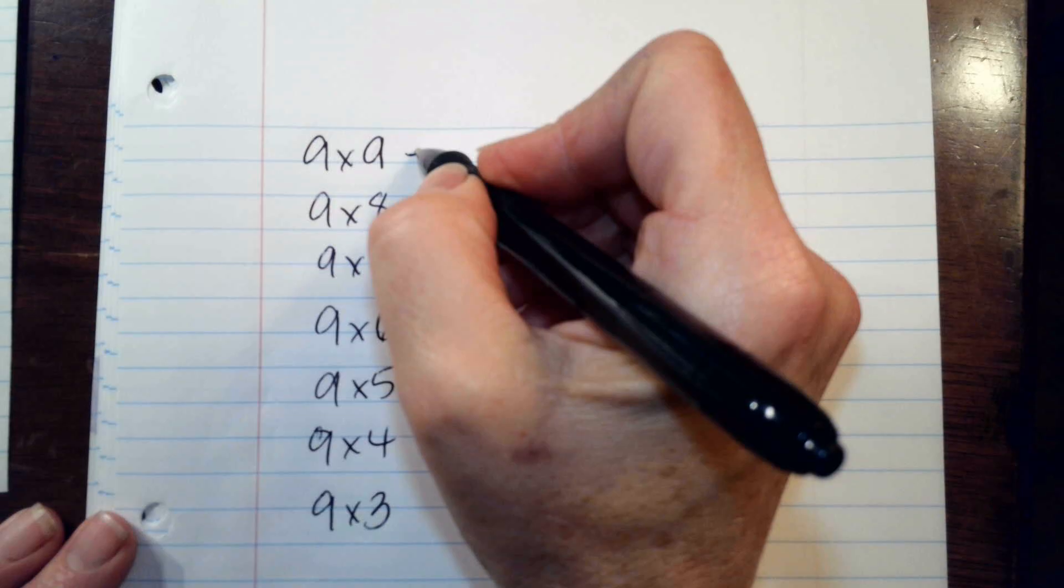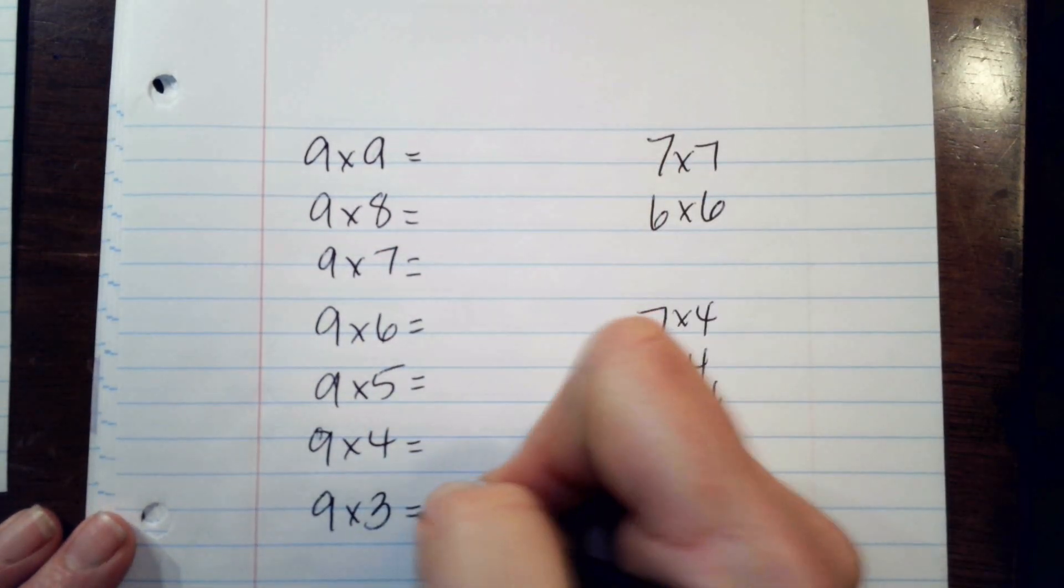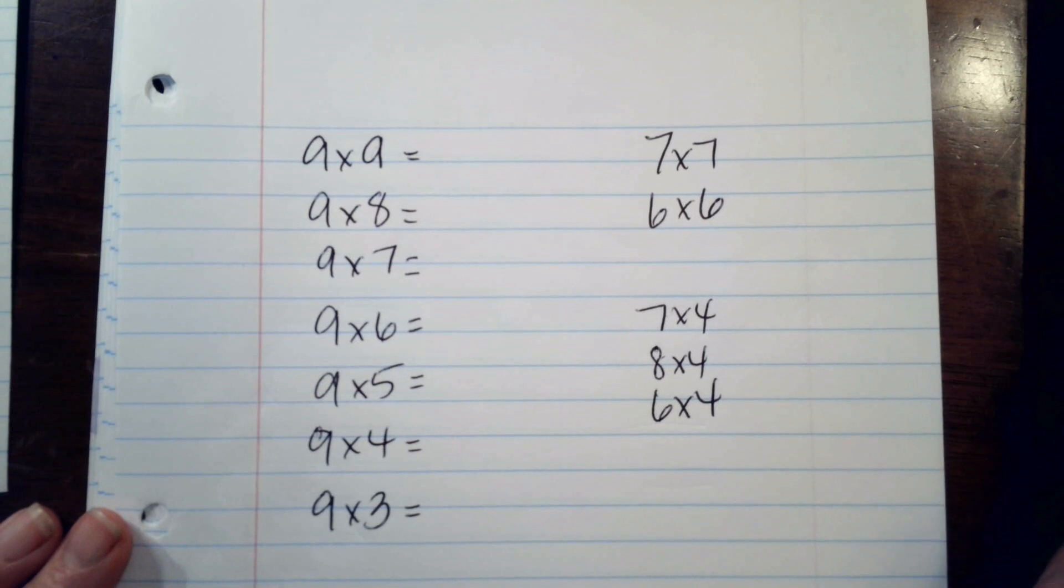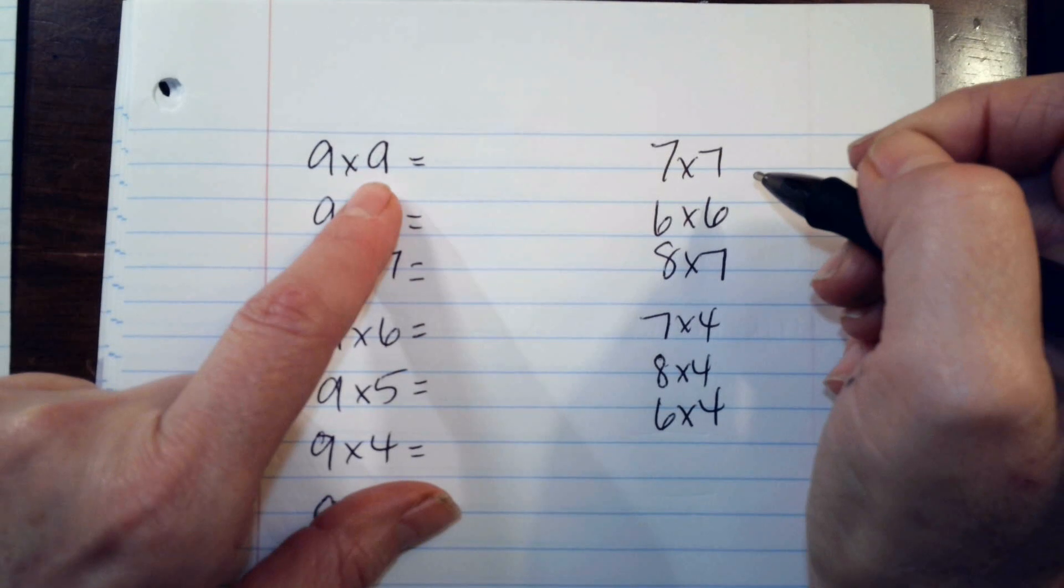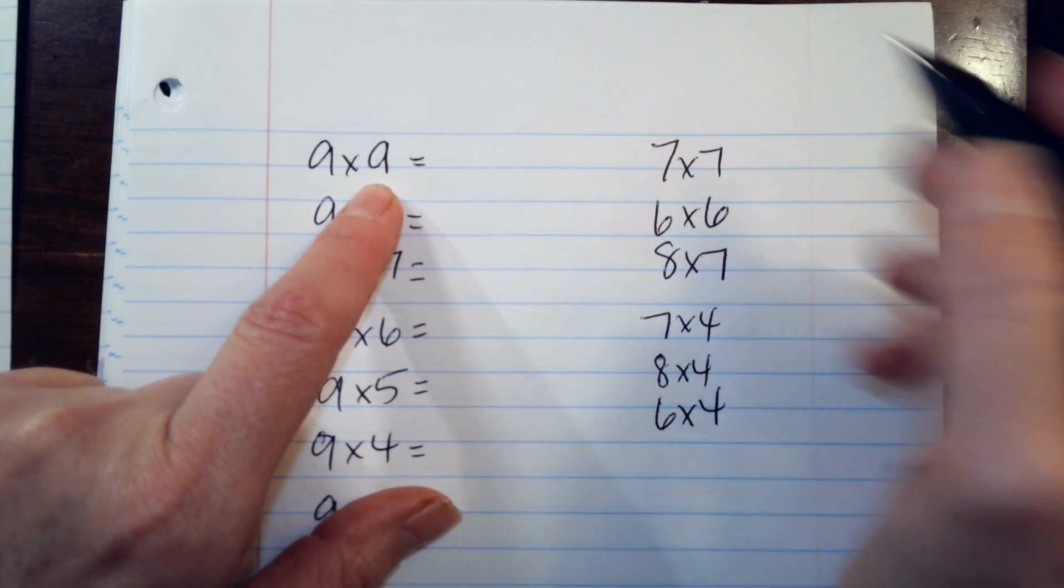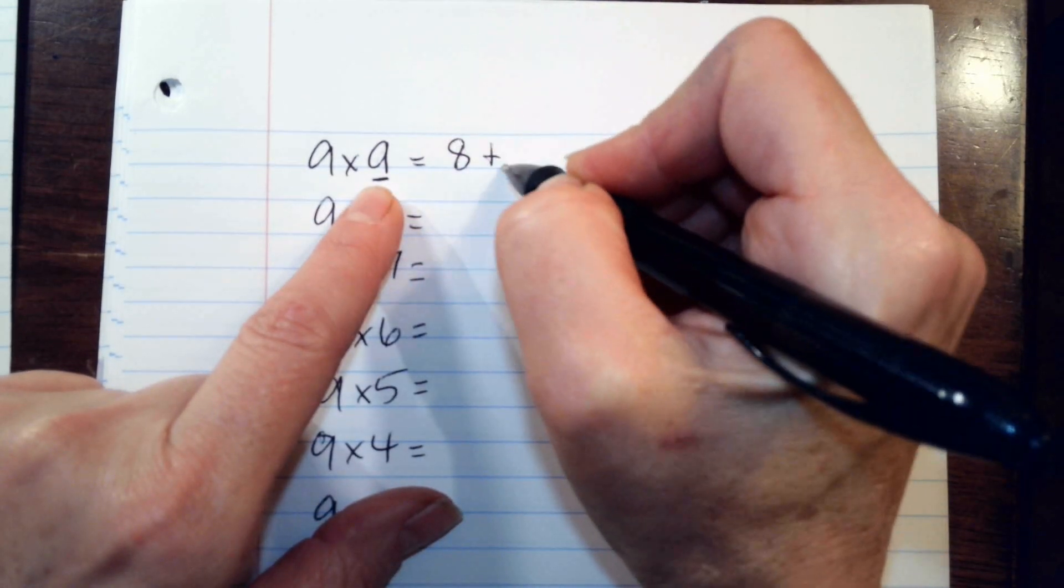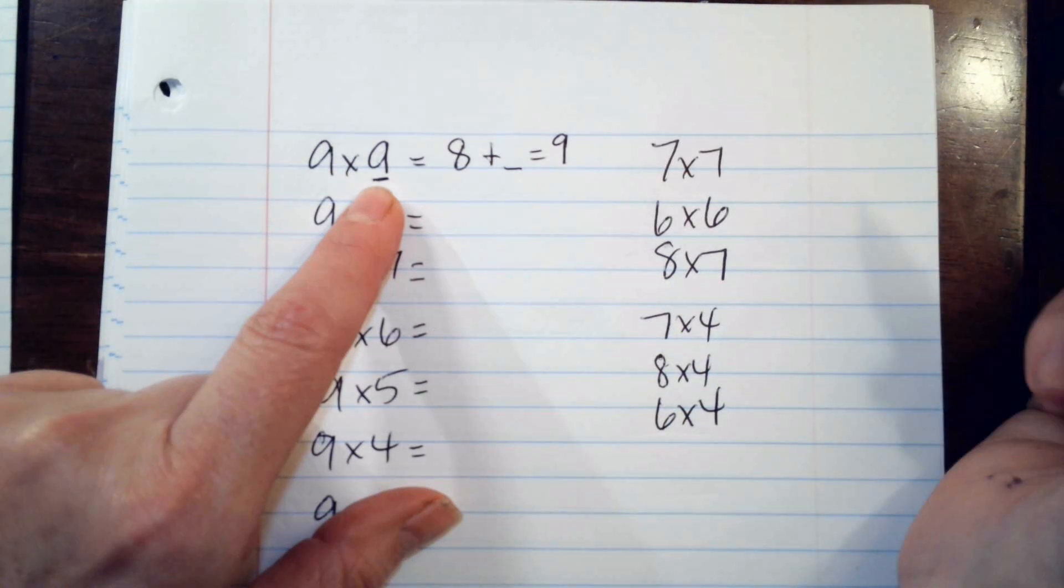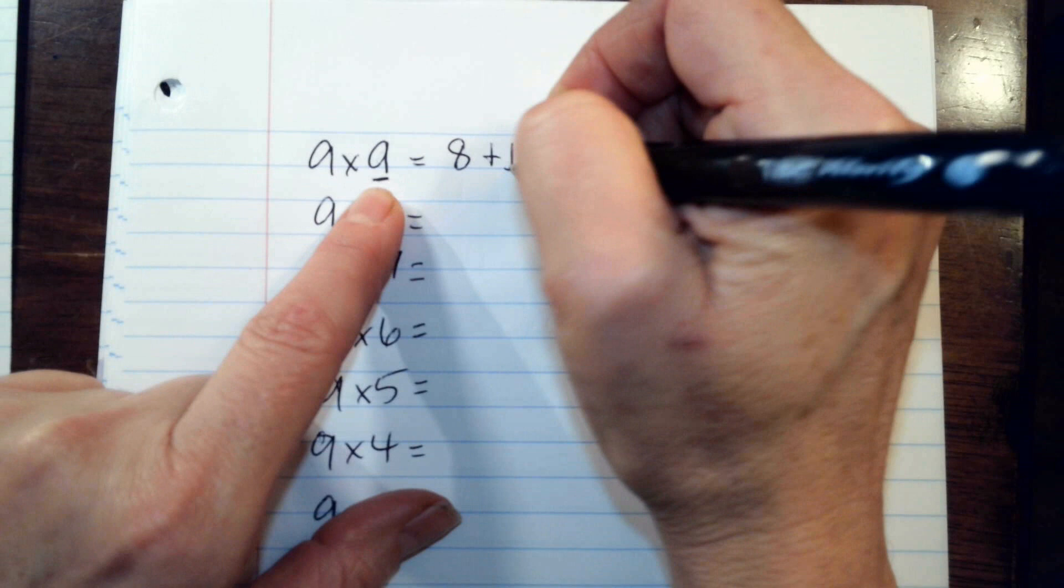So the first digit is... Oh, now I get what I was doing wrong. I was making it ten, not nine. So we're going to do, first digit is one less than the number that you're multiplying by nine. So for this one, nine times nine, first digit is eight. Eight plus something equals nine. What is my something? One.